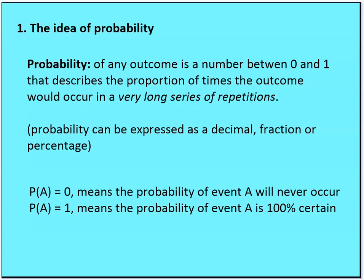The probability of an outcome is going to be some number between zero and one, including zero and one, that describes the proportion of times the outcome would occur in a very long series of repetitions. Probability can be expressed as a decimal, fraction, or percentage. Typically it's expressed as a decimal.